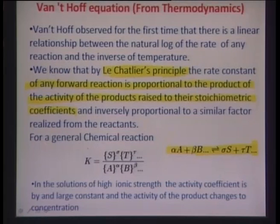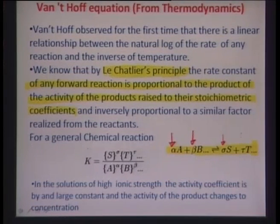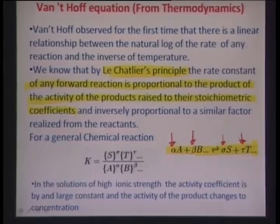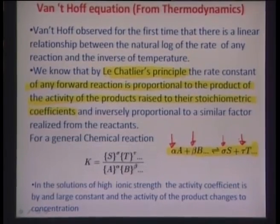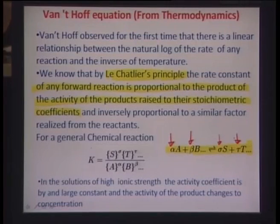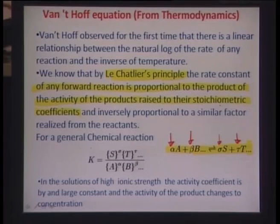By Le Chatelier's principle, the rate constant of any forward reaction is proportional to the product of the activity of the products raised to their stoichiometric coefficients, divided by the activity of the reactants raised to their stoichiometric coefficients. Here the stoichiometric coefficients are α, β (for reactants) and σ, τ (for products). For now, let us consider activity to be equal to concentration.